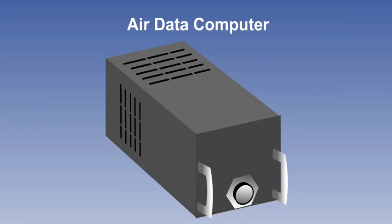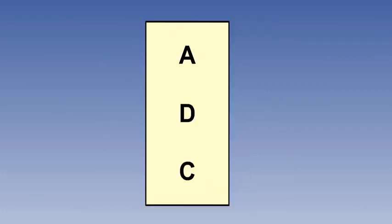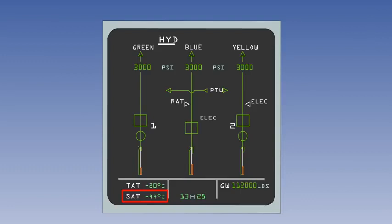However, any large airliner less than 20 years old or thereabouts will have an Air Data computer. We will look at this device in more detail in a later lesson. The ADC is a computer that takes inputs of pitot, static, angle of attack, and TAT, and processes them to calculate airspeeds, altitude, Mach number, TAT, and SAT. The static air temperature is therefore automatically computed.